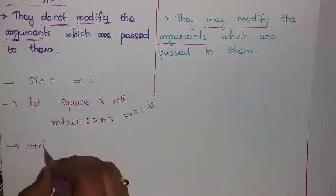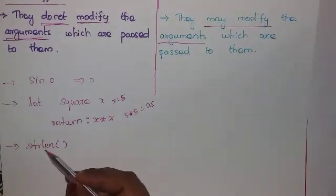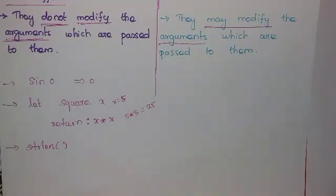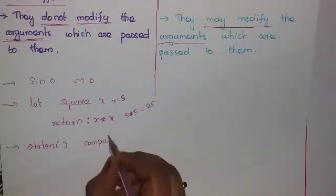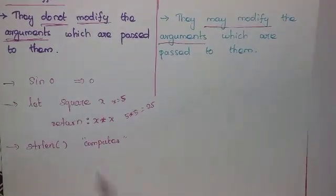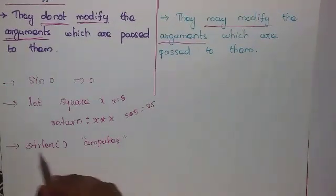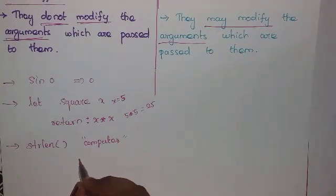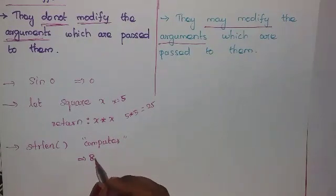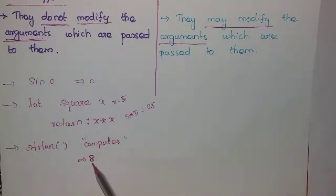Another example is strlen. This function counts the characters in a string and returns an integer value. For example, the string 'computer' has 8 characters, so it returns 8. If you run this function with the same input, it always produces the same result. Similarly, the power function calculates the power raised to a base value — for example, 2 to the power 2 always returns 4. Calling it again and again with the same input gives the same output.